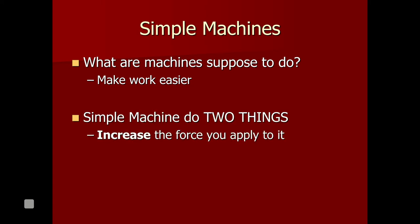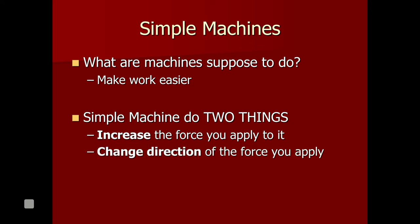A simple machine will either increase the force that you apply, or change the direction of the force you apply. It can also decrease the force — for example, if you're trying to manipulate very delicate objects, you might need something that decreases the force your fingers apply. But for our purposes in physical science, we're basically always going to say it's there to increase your force and change the direction of it.